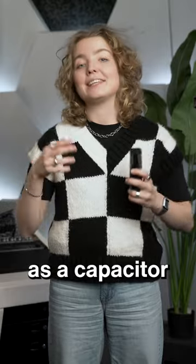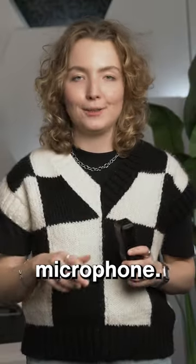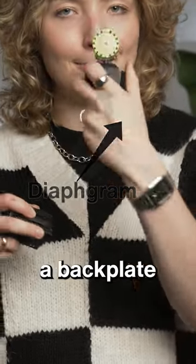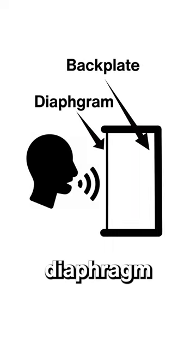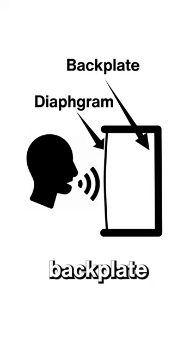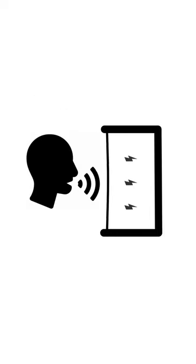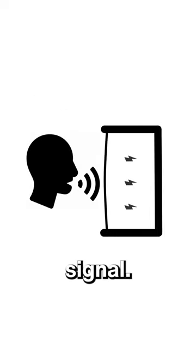A condenser microphone, also known as a capacitor microphone, includes a diaphragm, a backplate and an amplifier. Sound waves change the space between the diaphragm and the backplate, altering capacitance and producing an electrical signal.